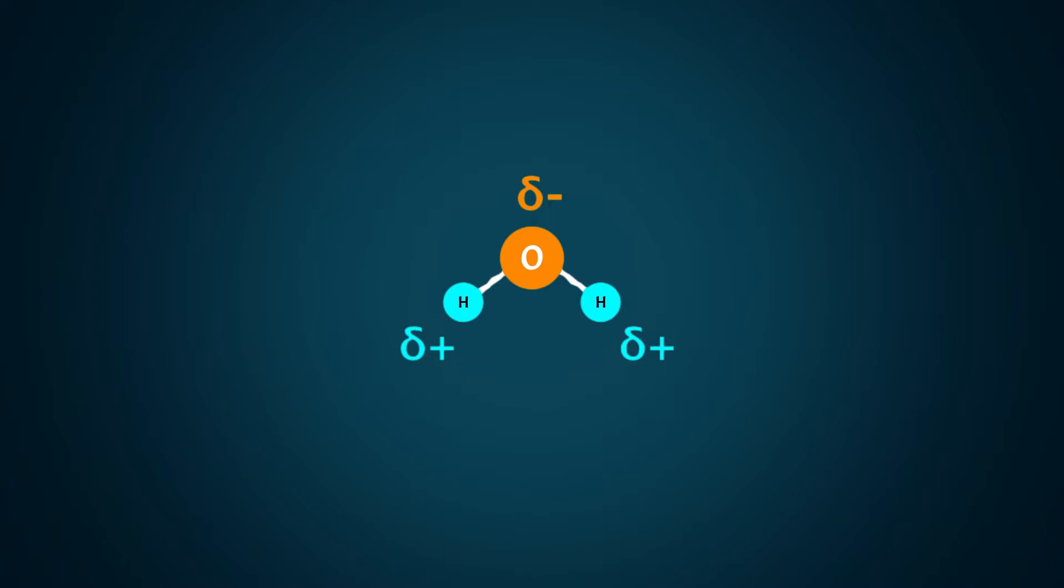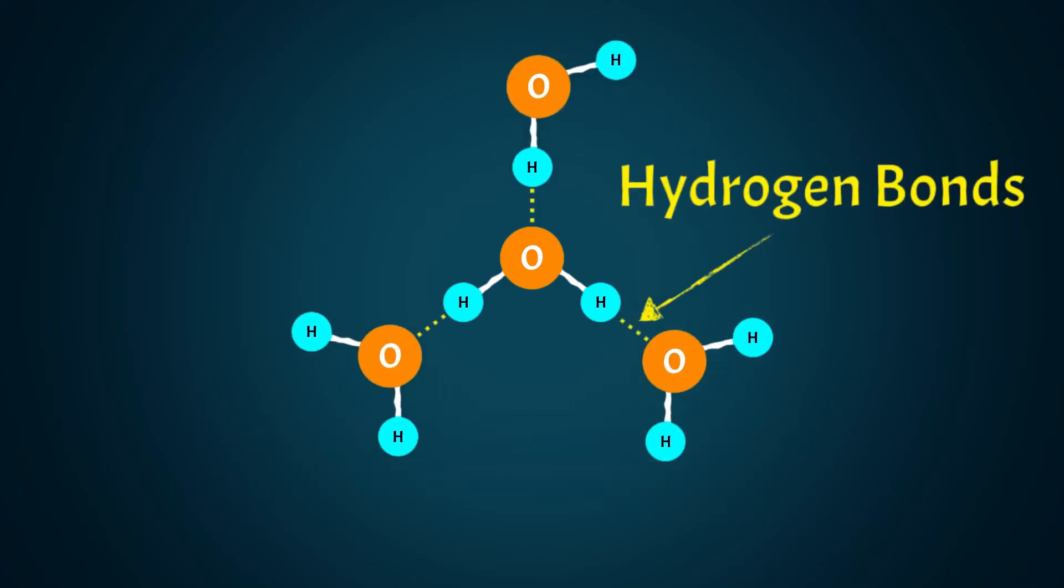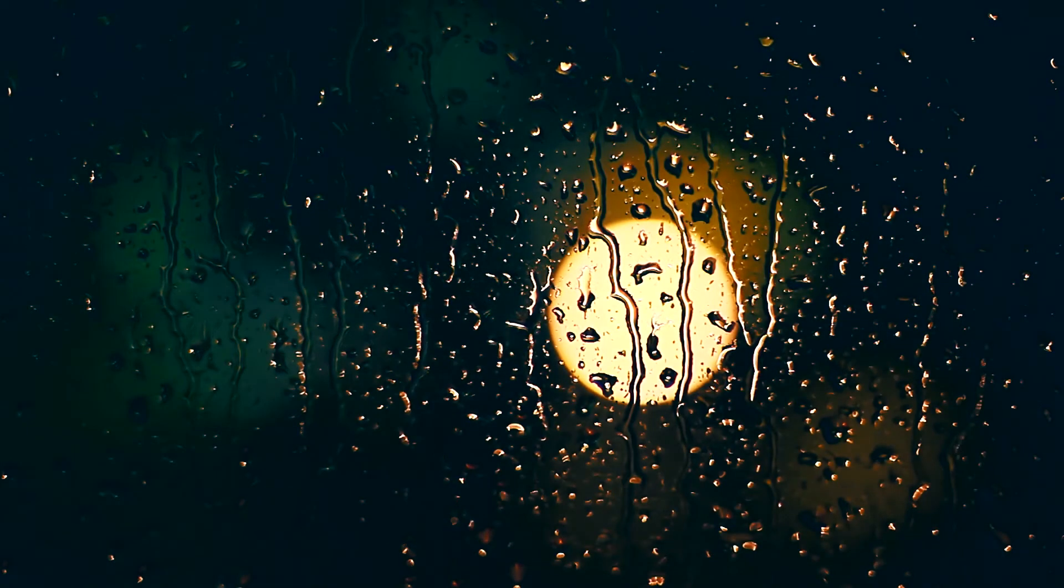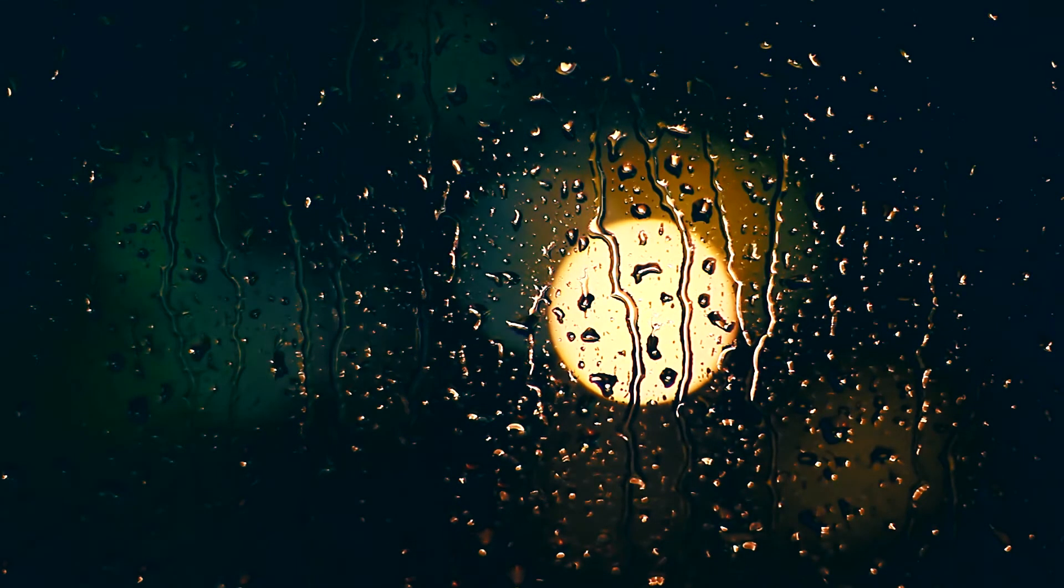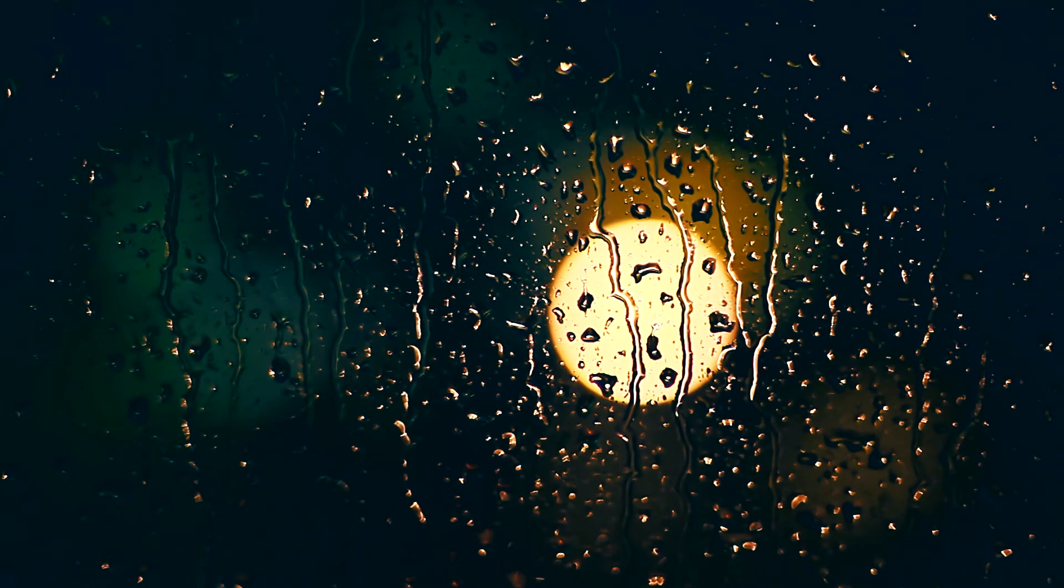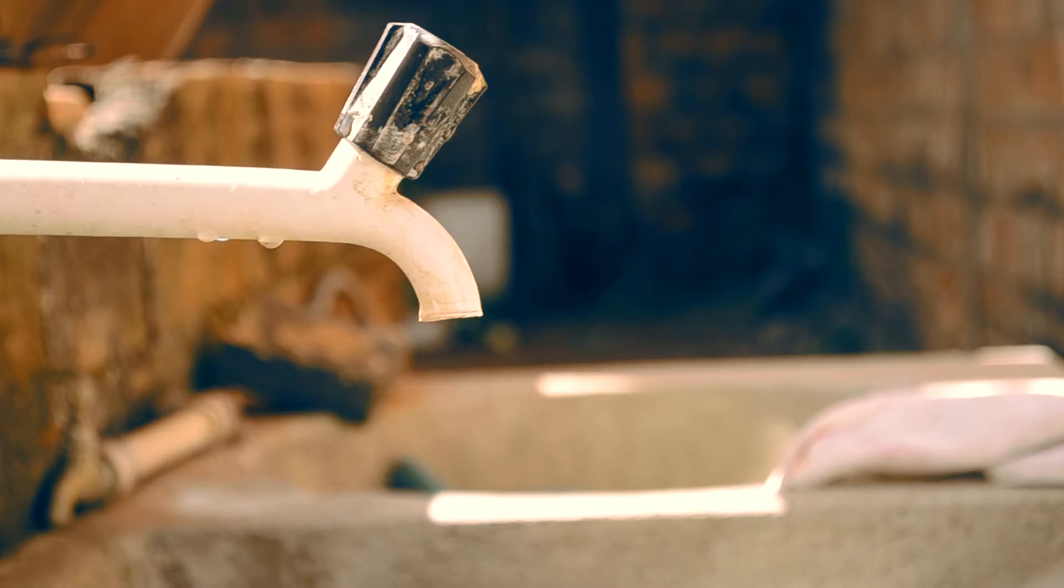Because opposites attract, water molecules are cohesive, meaning they are attracted to each other and held together by hydrogen bonds. You can see this wherever you see a small quantity of water. Water molecules tend to clump together into droplets rather than spread evenly over a surface. Even water falling from a tap will group together.